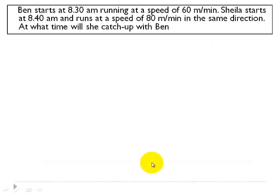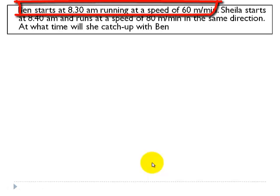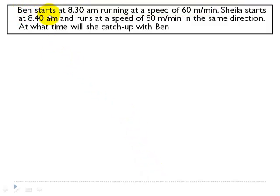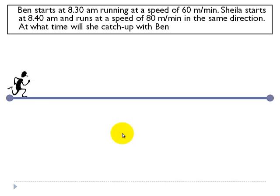Let's dive into the problem straight away. Ben starts at 8:30 am running at a speed of 60 meters per minute. Ben is starting and the start time is 8:30 am and Sheila starts at 8:40 am which is actually 10 minutes after 8:30 am.